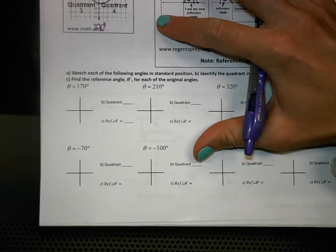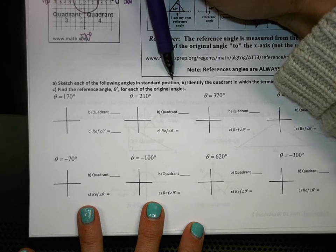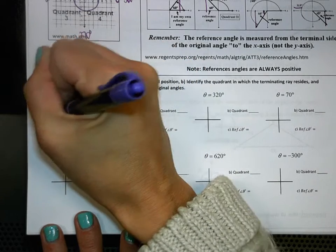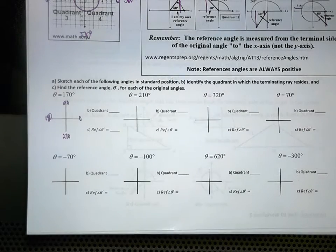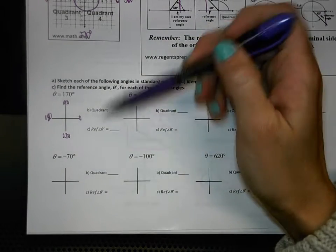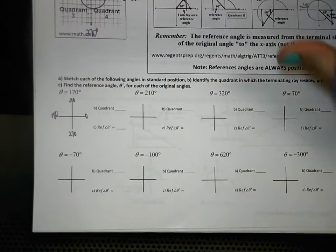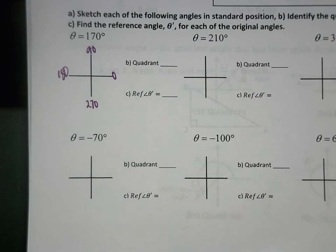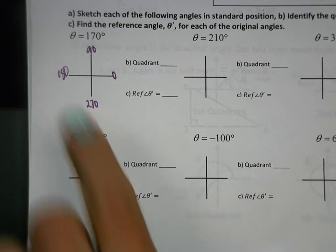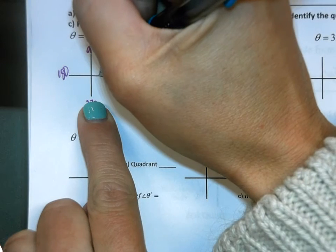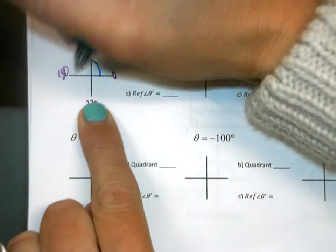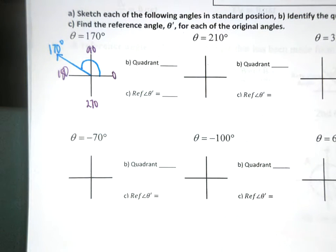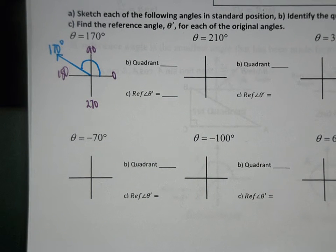Let's start practicing. Sketch each of the following angles in standard position. For 170 degrees, it's important to remember your 0, 90, 180, 270. If you don't have those memorized, write them on every single one. Where is 170 degrees going to go? Near 180, right? So when you're drawing your angle, you start at 0, go to 170, and draw a line there. I normally just put 170 degrees by where my line is. That is the angle sketched in standard position.